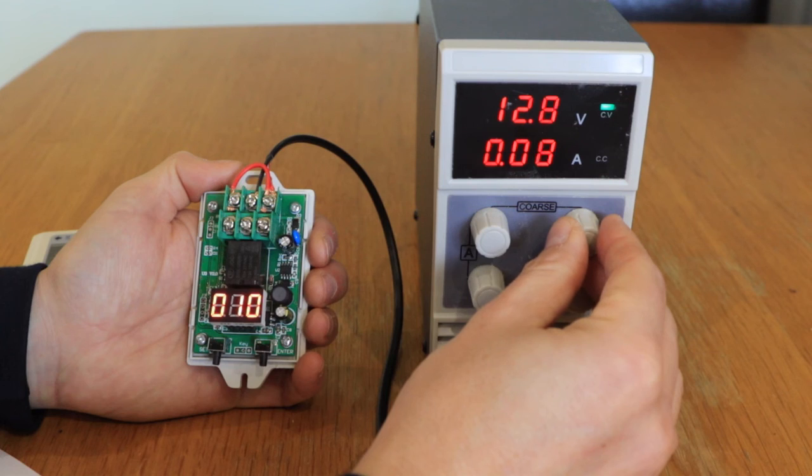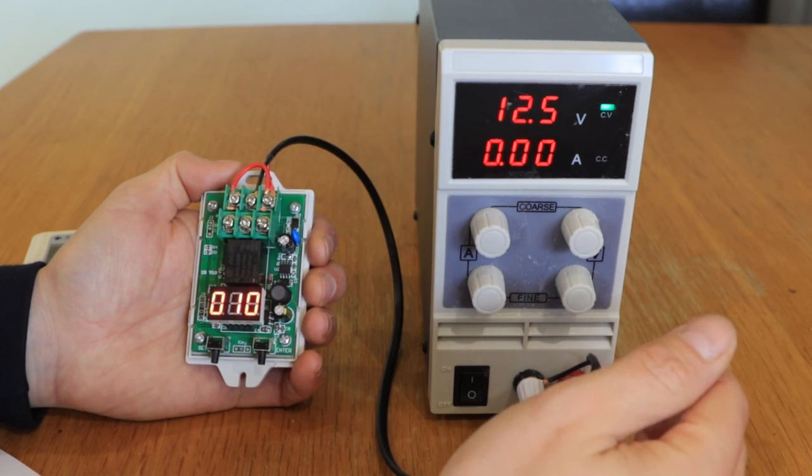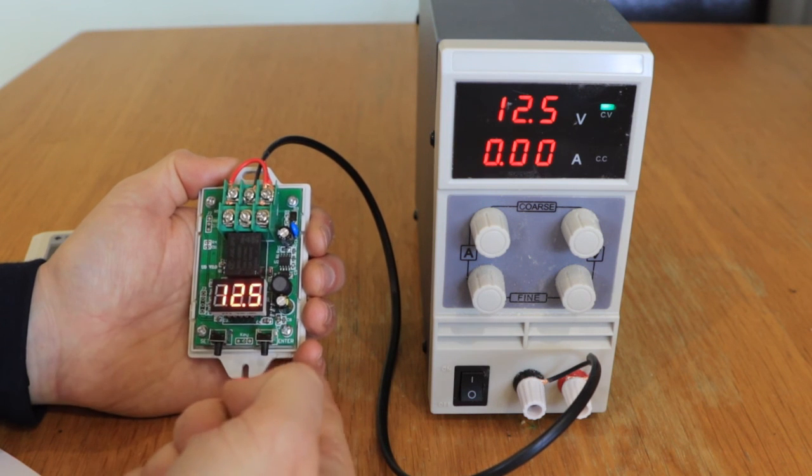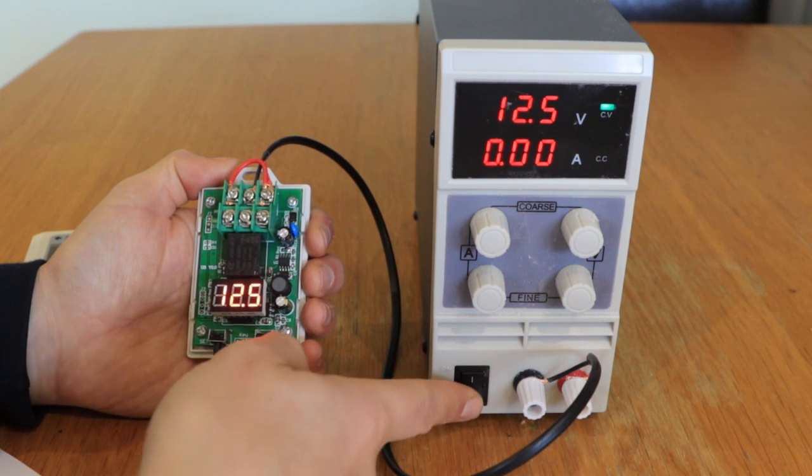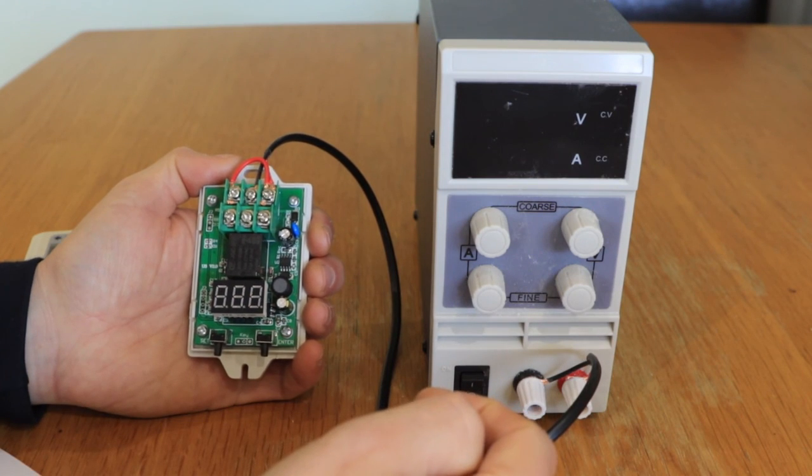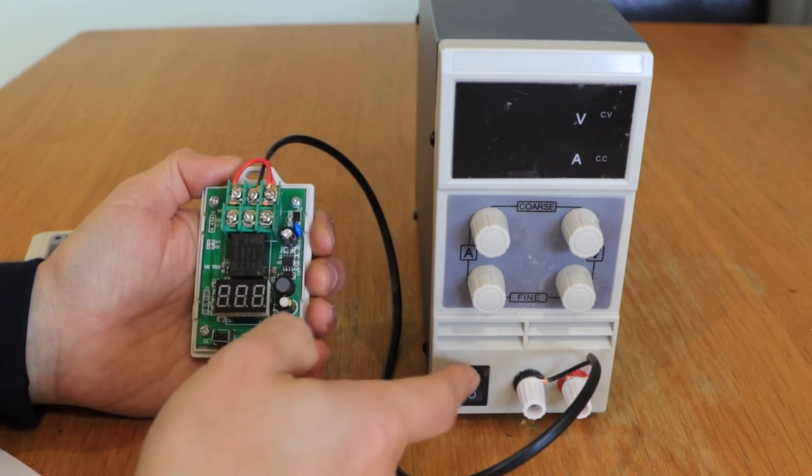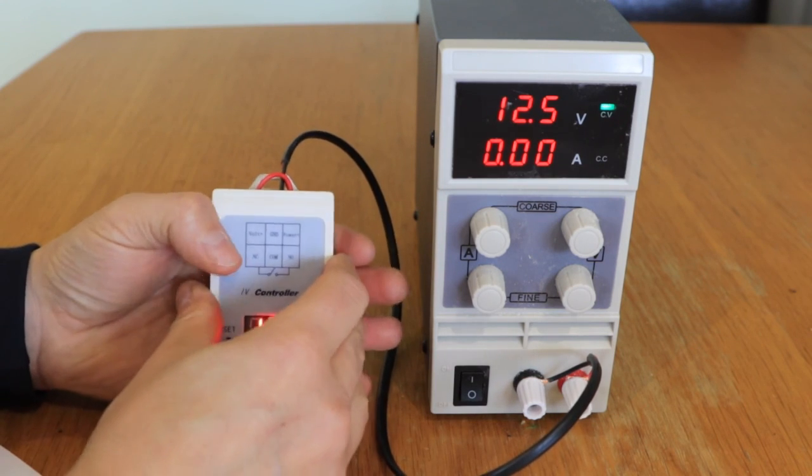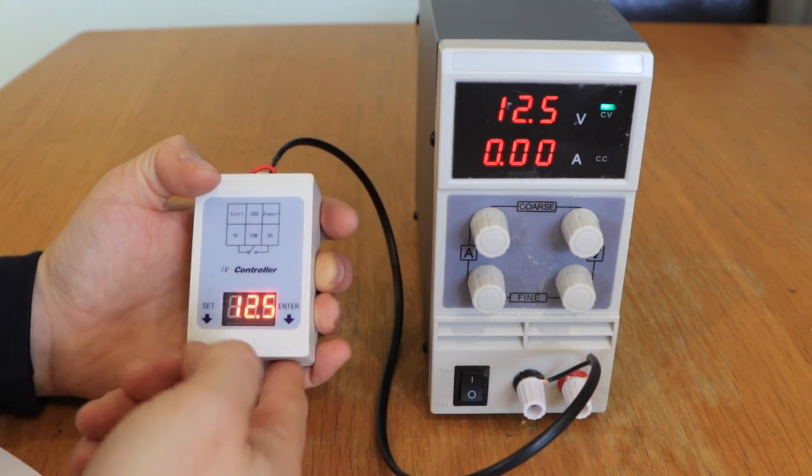There we go. So that's working as expected. If I leave this in this mode I can press the enter button to display the voltages. If I turn this off, all those parameters are then stored within the device. So if I turn it back on again, it goes back to exactly the same setting as before. Pop the cover back on and we're good to go.